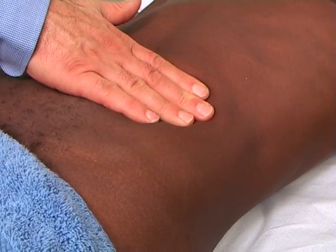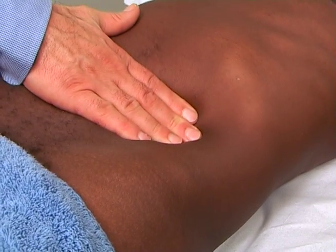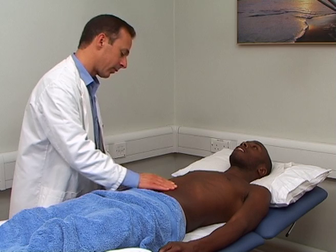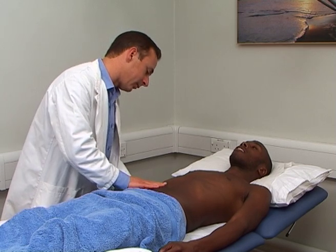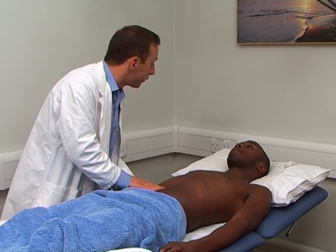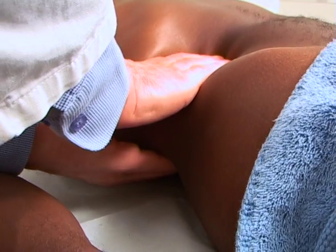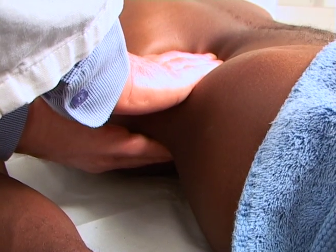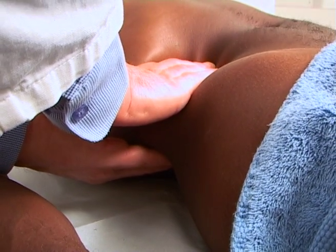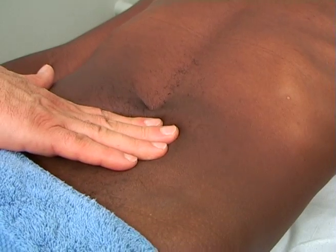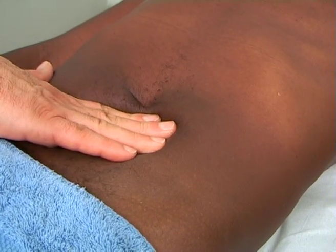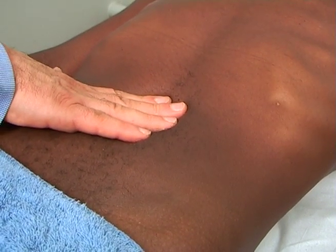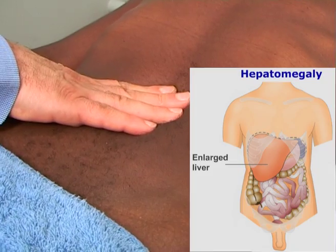Ask the patient to cough. You need to use both hands — with one hand on the back of the patient under the twelfth rib, pushing upwards, and the dominant hand pushing down. Reduce the pressure if necessary to allow the liver margin to slip under your fingertips.